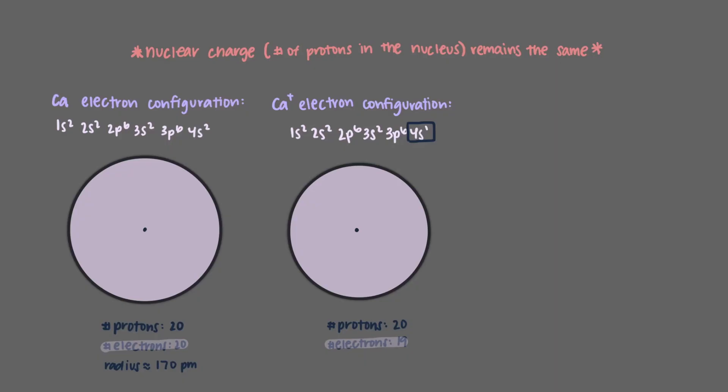So, while the valence electron of both calcium and calcium plus are 4s electrons, the one remaining 4s electron of calcium plus will be smaller than calcium. But when yet another electron is removed from calcium plus to make calcium 2 plus, the largest electron wave is now going to be a 3p electron.